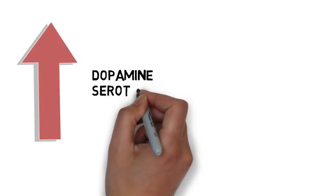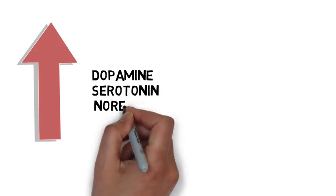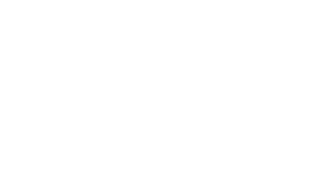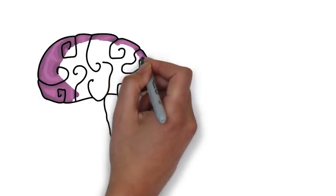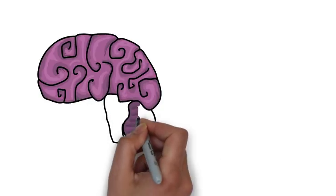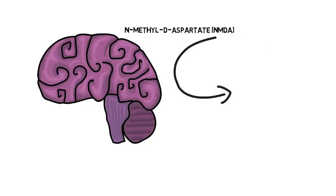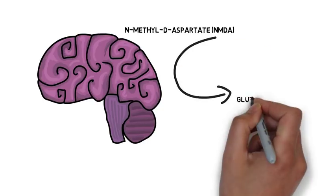The target site of PCP is the NMDA receptor, which is the receptor for the excitatory neurotransmitter glutamate. The cerebral cortex and hippocampus contain a significant number of NMDA receptors. The blocking of these receptors by PCP is thought to contribute to the cognitive defects that the drug produces.